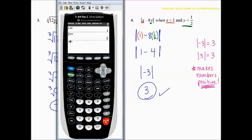Now I can type x minus 8y. x minus 8, alpha, y, enter. And 3 is the correct answer. Yay, we did it.